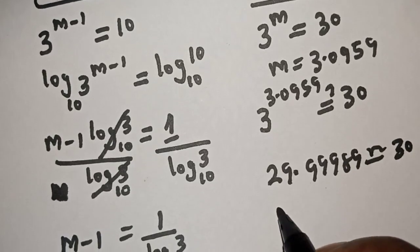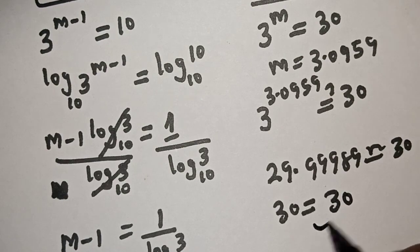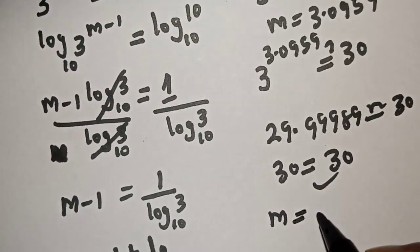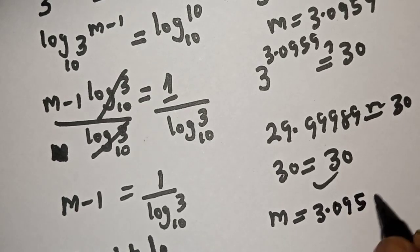Therefore, the left-hand side is 30 is equal to the right-hand side 30, which satisfied the given equation at m is equal to 3.0959.